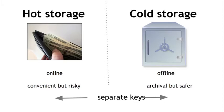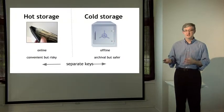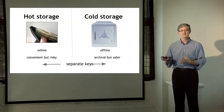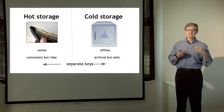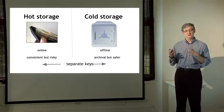The idea of hot and cold storage is that you're going to have some storage which is hot or online, as on your phone or in your local computer. Storing Bitcoins in that way is convenient, but it's also somewhat risky. You keep some money in hot storage and you keep some money in cold storage. Cold storage is offline. It's locked away somewhere. It's not connected to the Internet. And it's archival — it's more secure, it's safer.